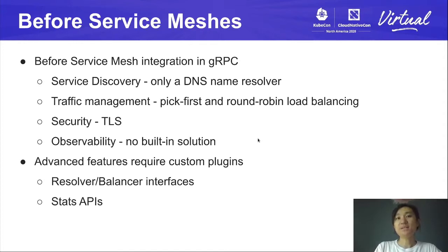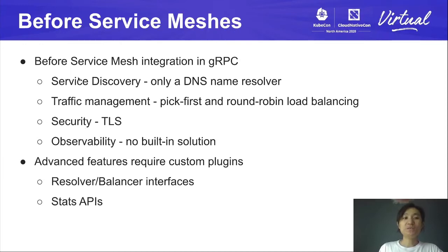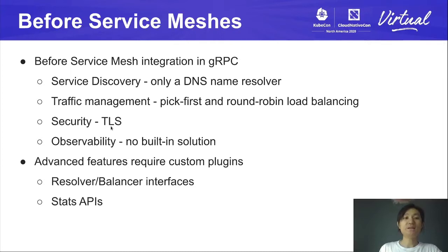For example, before you can send RPCs, you will need to find the new services. While you're sending RPCs, you will care about load balancing and security. Before service mesh support is added into gRPC, gRPC provides limited support for those problems. There's one DNS server and two very simple pick-first and round-robin balancers.